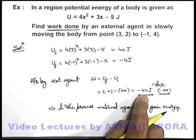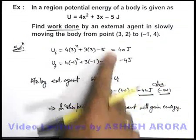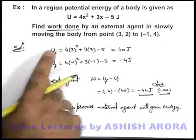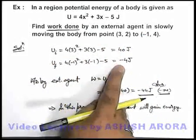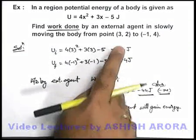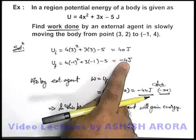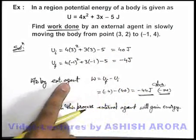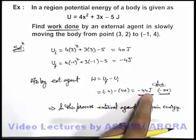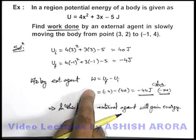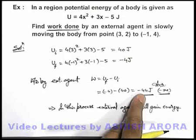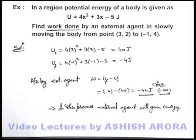For our understanding, in the process of displacement as the body is displaced from a high energy to a low energy state, the body itself will move — the field forces are taking the body from this point to this point. So the field is doing the work and the external agent will be gaining energy, that is 44 joules. That is why we say work done by the external agent is −44 joules. That is the answer to this question.